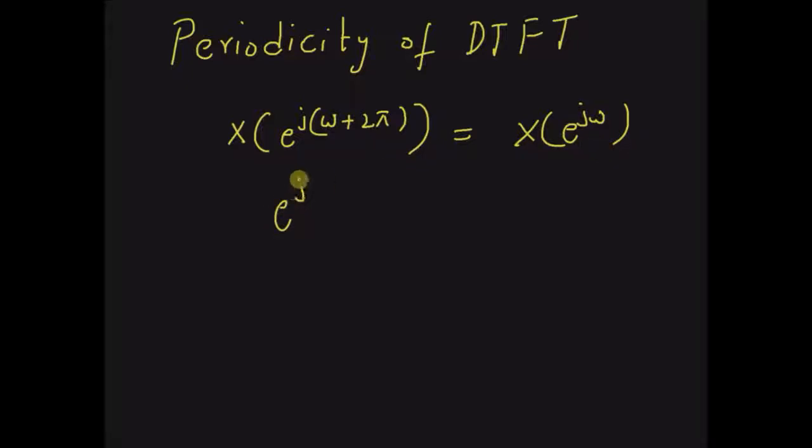This is because e^j(ω+2π) equals e^jω multiplied by e^j2π. And we know that e^j2π is exactly equal to 1. So it is equal to 1.